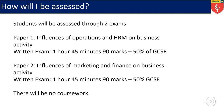How will I be assessed? Students are assessed in business through two exams — paper one and paper two. Paper one is titled Influences of Operations and HRM, Human Resource Management on Business Activity. This is a written exam, an hour and 45 minutes, 90 marks, and this makes up 50% of their GCSE. There will be no coursework to do in GCSE Business Studies.